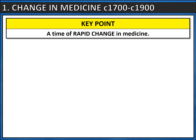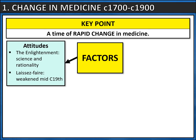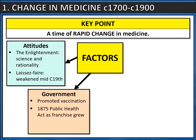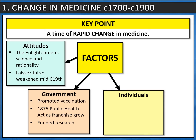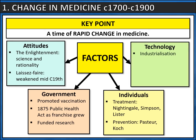Our key point is that this was a period of rapid change in medicine, and there are a number of factors that contribute to this. Firstly, attitudes — the key change being the end of laissez-faire, which weakened from the mid-19th century onwards, feeding into an enhanced role for government, crucially the 1875 Public Health Act, which was compulsory and focused on sanitation. Furthermore, the work of key individuals such as Florence Nightingale, James Simpson, and Joseph Lister, as well as the importance of work overseas — Louis Pasteur in France and Robert Koch in Germany. Lastly, the enhanced role of technology: this was the industrial age, leading to increased developments in microscopes and laboratory equipment. We've got four key factors that play a role, and it's really worth your time knowing at least three of those in detail.